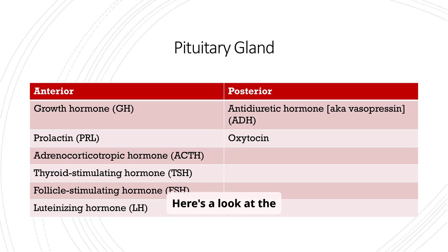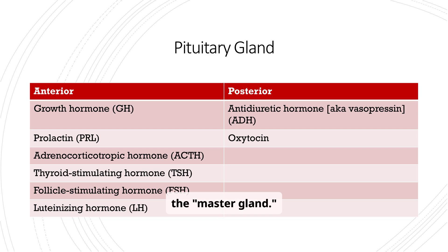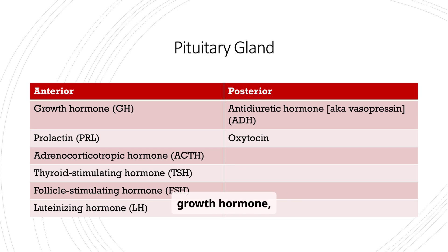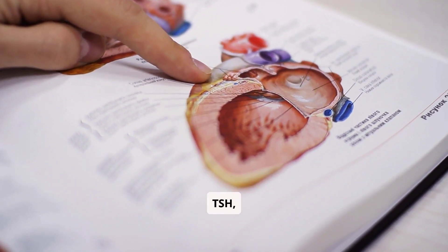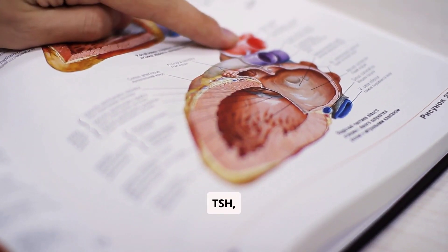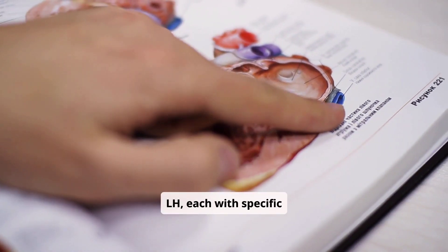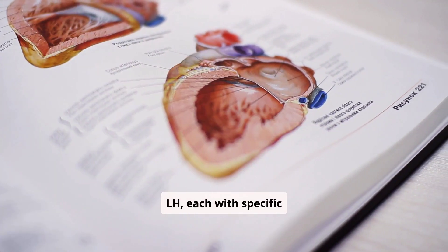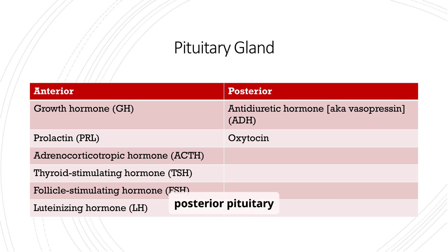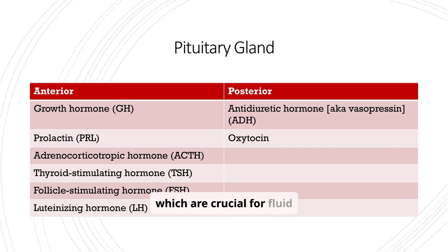Here's a look at the pituitary gland, often called the master gland. The anterior pituitary releases hormones like growth hormone, prolactin, ACTH, TSH, FSH, and LH, each with specific roles. The posterior pituitary stores and releases ADH and oxytocin, which are crucial for fluid balance and social bonding.